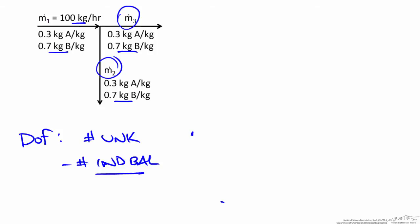In this case we have two unknowns in M2 and M3. In most scenarios the number of independent balances that can be written on a system is equal to the number of species that we have. So with two species A and B, this suggests that we have zero degrees of freedom and we can calculate M2 and M3.